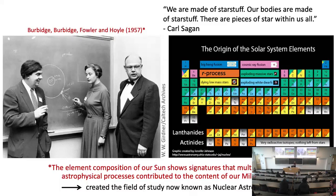We know we need the R process to produce the heaviest elements such as gold, but we don't really know at this point in time where the R process is happening and what's contributing to what we see in the sun. Burbidge and Burbidge was a married team — the first Burbidge is Margaret Burbidge, a powerhouse of a woman leading this work back in the 50s. Their work has set the foundation for what we now call nuclear astrophysics.